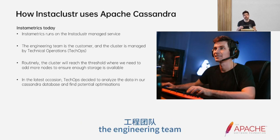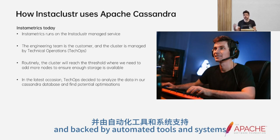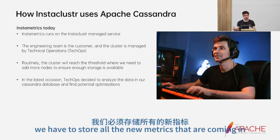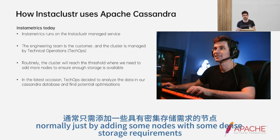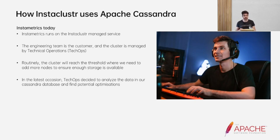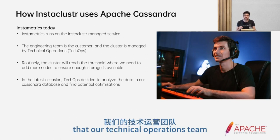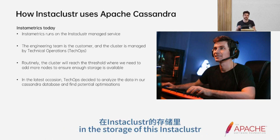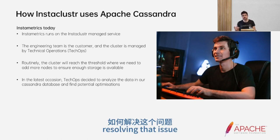InstaMetrics has lived virtually the entire duration of Instacluster and gone through a number of different iterations. As of today it runs on the Instacluster managed service — the engineering team at Instacluster is the customer, and it's managed as any other customer cluster by the technical operations team. As new nodes come online we have to store all the new metrics coming in, and there was one occasion where we hit the threshold where we needed more space. At that point our technical operations team, our Cassandra experts, decided to have a close inspection of what was actually taking up so much storage in this InstaMetrics cluster.